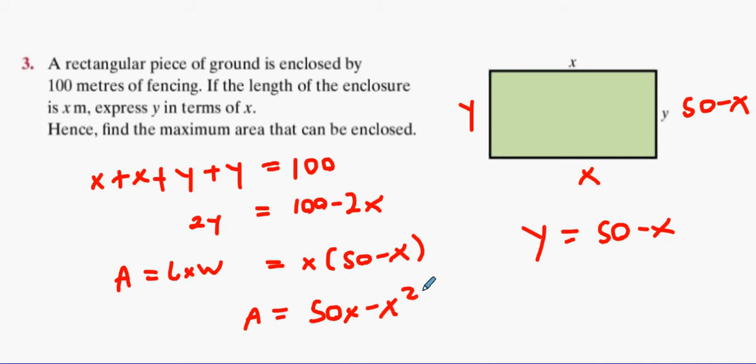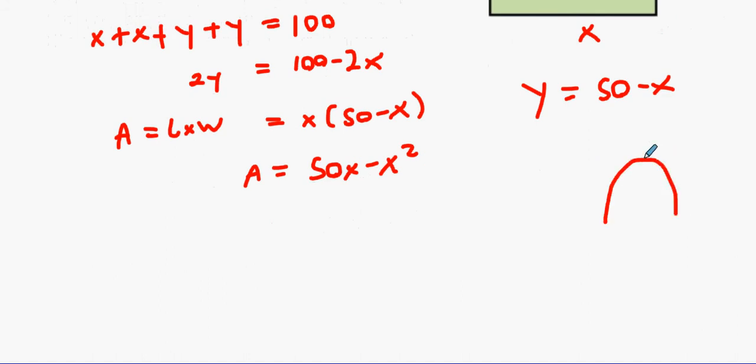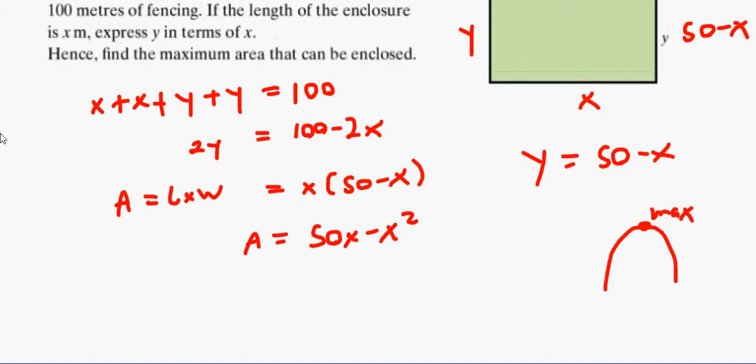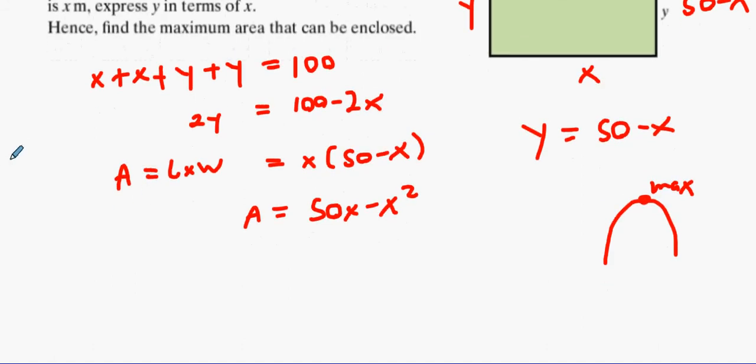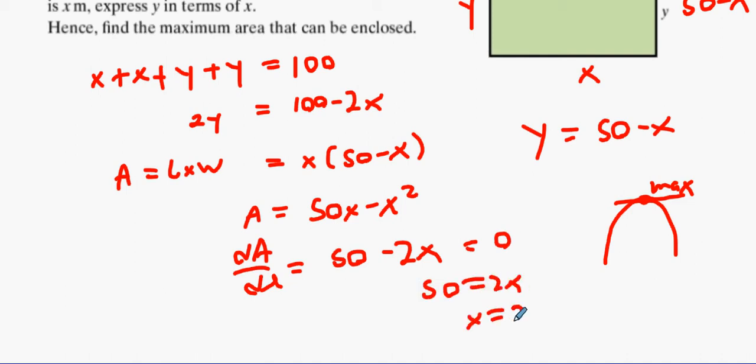Now, what type of function is this if I was to draw that out? It's n-shaped. And what do n-shaped usually have? They have a max. Now it says get the maximum, it doesn't say you have to prove it, does it? So the turning point will be a maximum. At the slope will be zero at the max. So what we do is we say dA/dx is 50 minus 2x, that equals zero. 50 equals 2x, x equals 25.